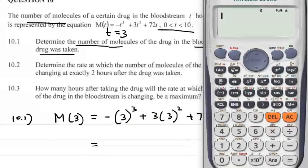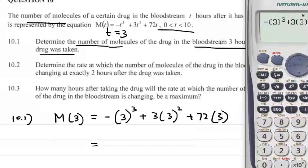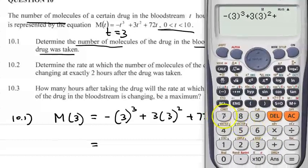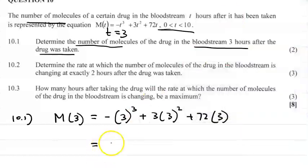Let's have a look at that. So it'll be -3³ + 3 × 3² + 72 × 3. And the answer is 216 molecules.